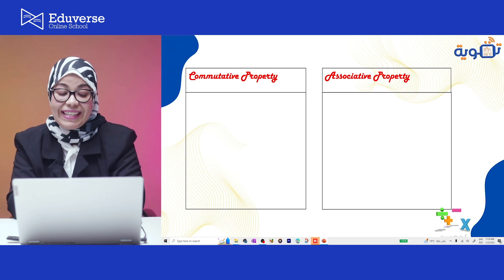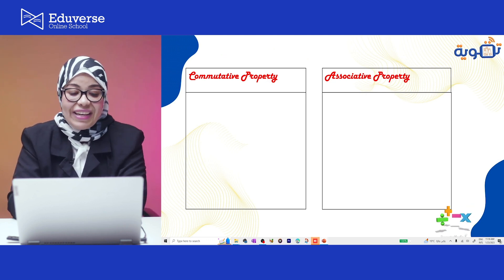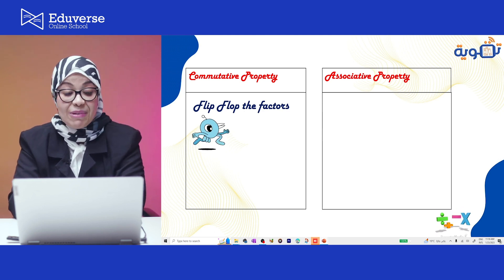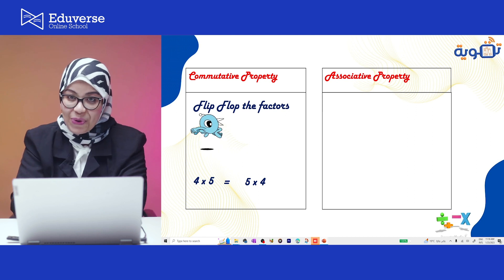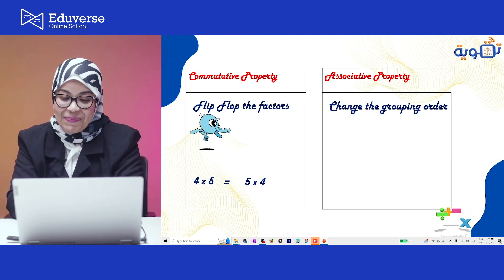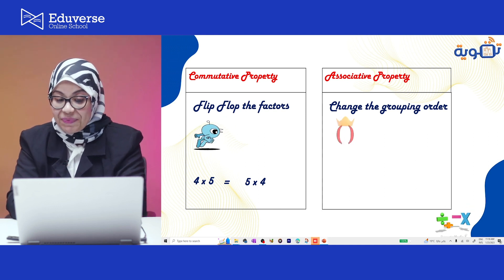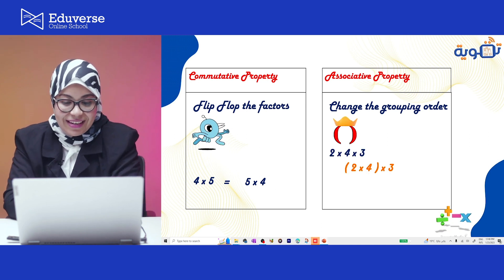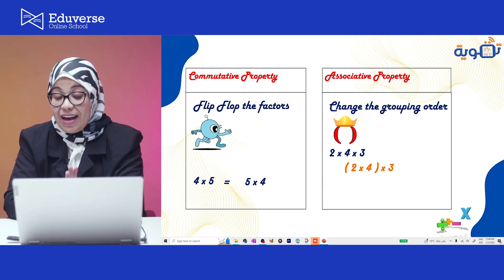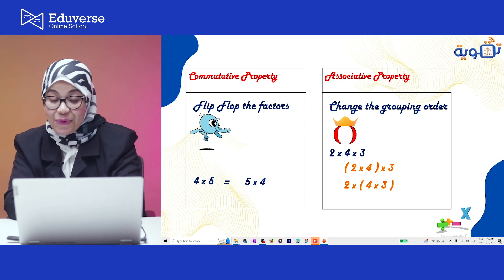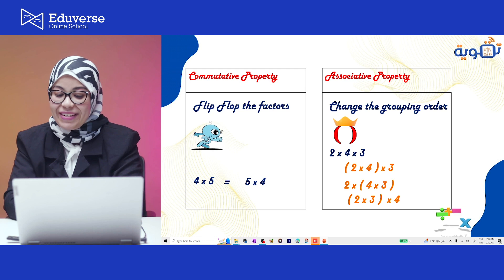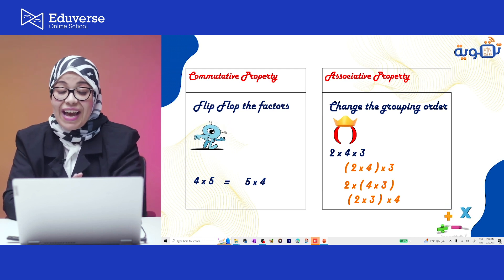Now let's summarize our journey. The commutative property — it's flip-flop the factors. Remember it with flip-flop: 4 times 5 equals 5 times 4. The associative property is changing the grouping order using king parentheses. So for 2 times 4 times 3, you can do 2 times 4 inside parentheses and 3 outside, or 2 outside with 4 times 3 inside, or 2 times 3 inside and 4 outside — and you will get the same answer. Thank you so much for watching. See you next journey. Goodbye.